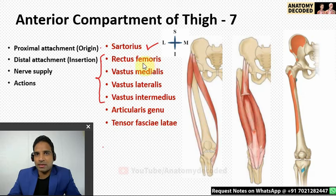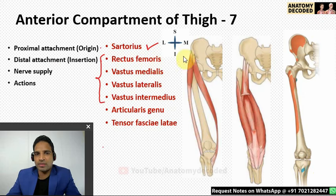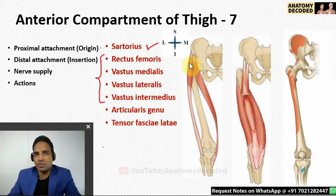Nerve supply for all four muscles — rectus femoris, vastus medialis, lateralis, and intermedius — is by the femoral nerve, specifically the posterior division. The action of rectus femoris is flexion at the hip joint and extension at the knee joint, since it crosses the hip joint. Vastus medialis, lateralis, and intermedius don't cross the hip joint, so their action is only extension at the knee joint.